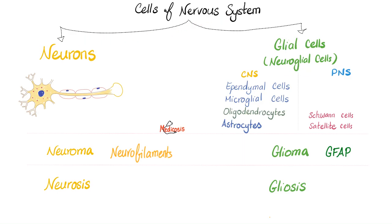Cells of the nervous system are divided into neurons and glial cells, or neuroglial cells. Glia means glue — they wrap around neurons and help them, so think of this as neurons and co-neurons. The most important distinction is that neurons are excitable tissue — they get action potentials, depolarization, repolarization, etc. But glial cells are not like that.